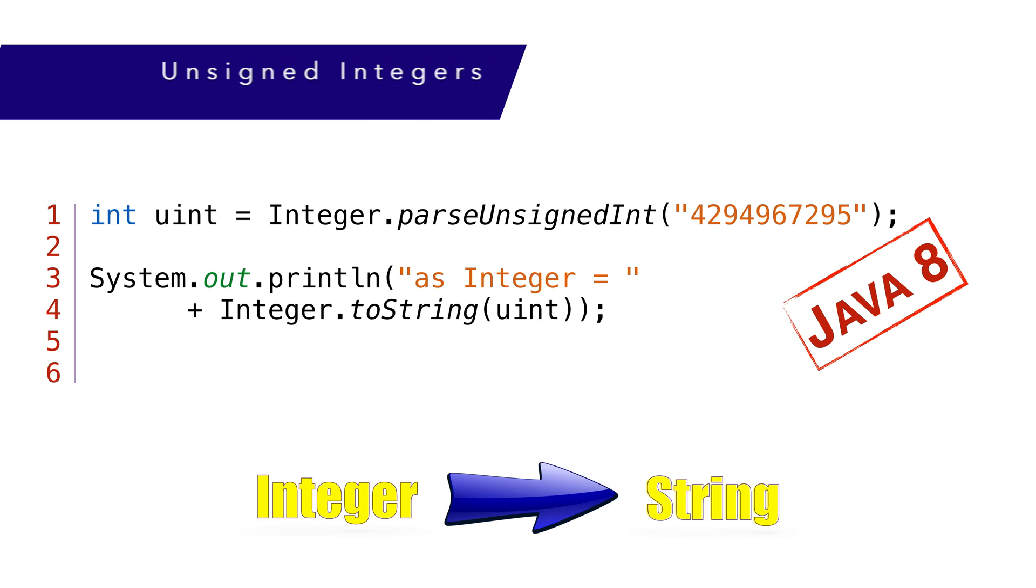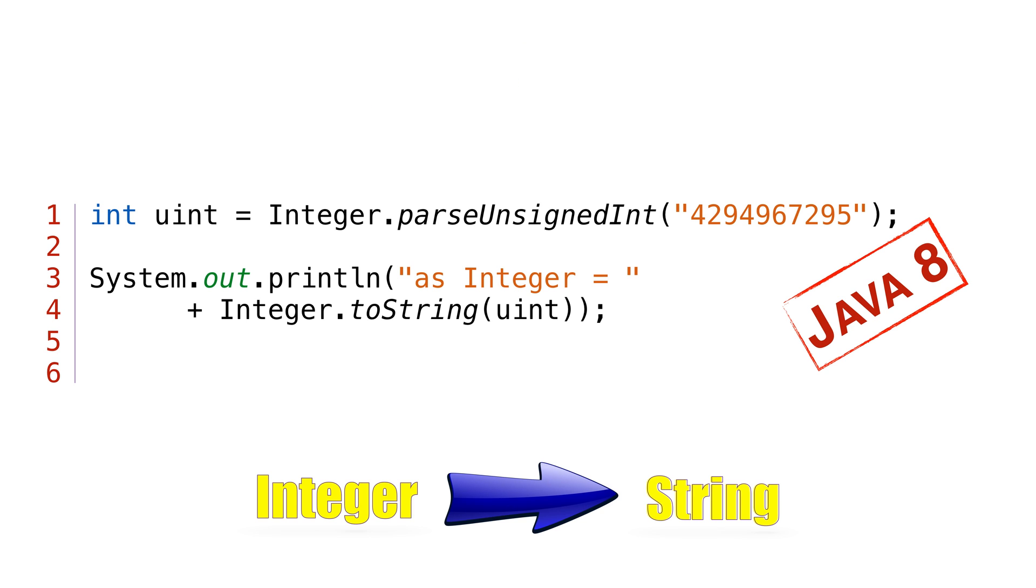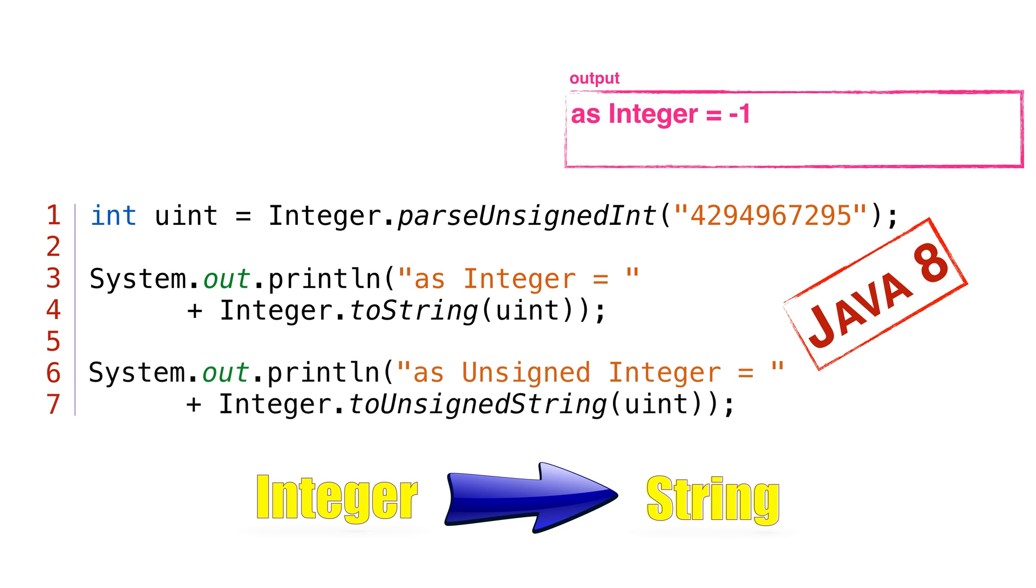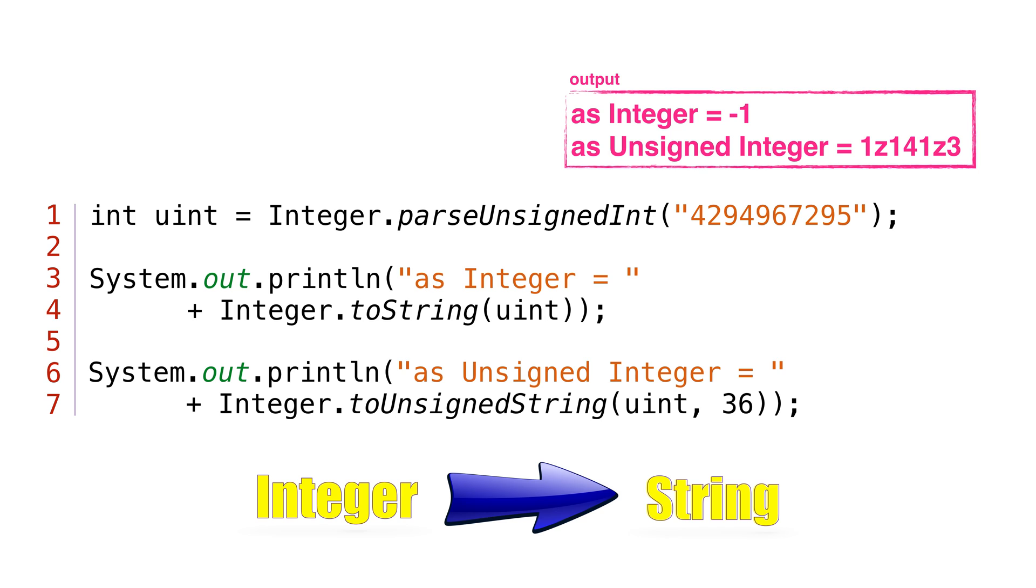Unsigned integer functions were added in Java 8. This is for the Integer and Long classes only. An unsigned integer in this context means the number is treated as if the signed bit just adds to the magnitude. So we get bigger numbers, but they're all positive. If we parse this big number as an unsigned int and print it as an integer, we get -1. That's because we're still working with a Java int primitive. To get the number as an unsigned integer string, we need to use the method toUnsignedString. To get the number as an unsigned integer string in a different radix, we can use the overloaded method that takes the radix as a parameter.